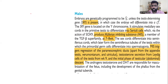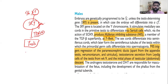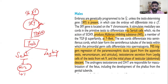Before we proceed to understand the approach, we need clarity on the development of external and internal genitalia. In a male with 46XY, the Y chromosome contains the SRY gene, which is responsible for testis development because of the testis-determining factor (TDF) on the SRY gene. Once the testis is developed, there are two kinds of cells: Sertoli cells and Leydig cells. The Sertoli cells are responsible for production of Müllerian inhibiting substance (MIS).